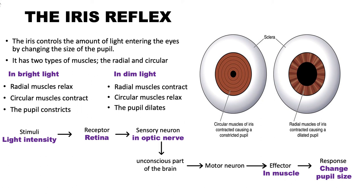Welcome to Global Science in a Nutshell. This is about the iris reflex. Here we are going to talk about how the iris changes — all the muscles within the iris change — so that the size of the pupil can be changed in order to control the amount of light entering the eye. What you see here is the pupil, and that is the iris.